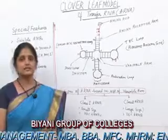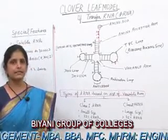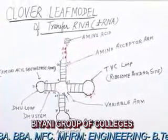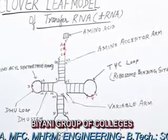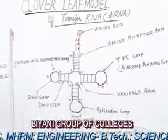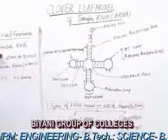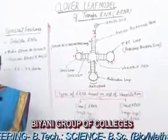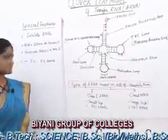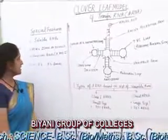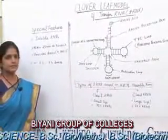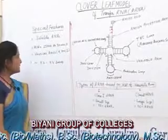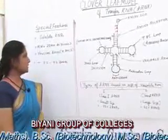Transfer RNA is also called soluble RNA, and it is a kind of ribonucleic acid which takes part in the synthesis of protein. It is soluble RNA with a molecular weight of about 25,000 to 30,000 Daltons. It is a single polynucleotide chain which has some unusual bases like pseudo-uridine, dihydro-uridine, and inosine, and it consists of about 73 to 93 bases.